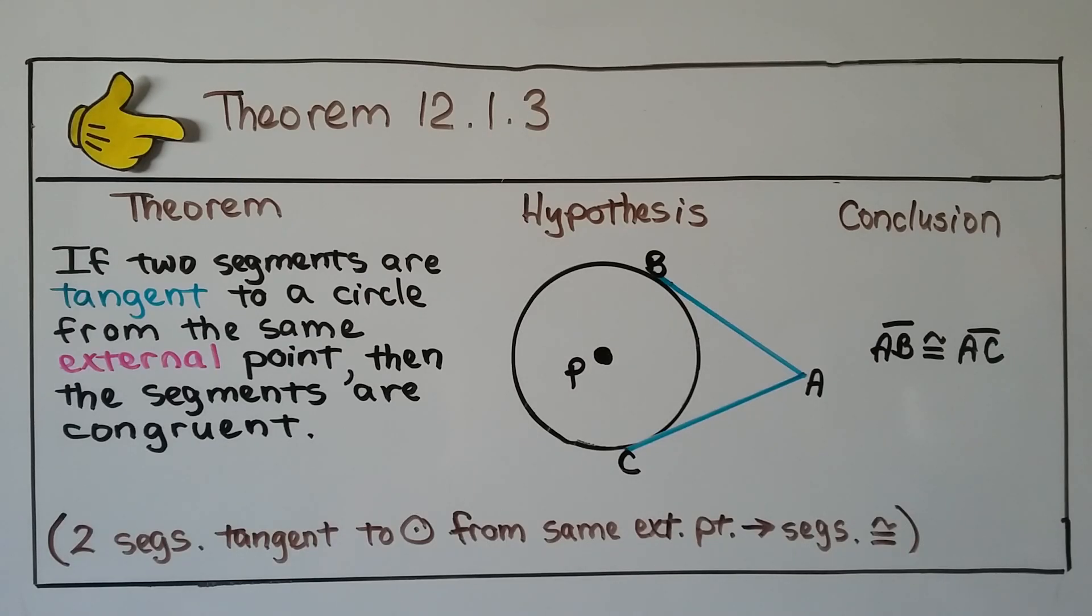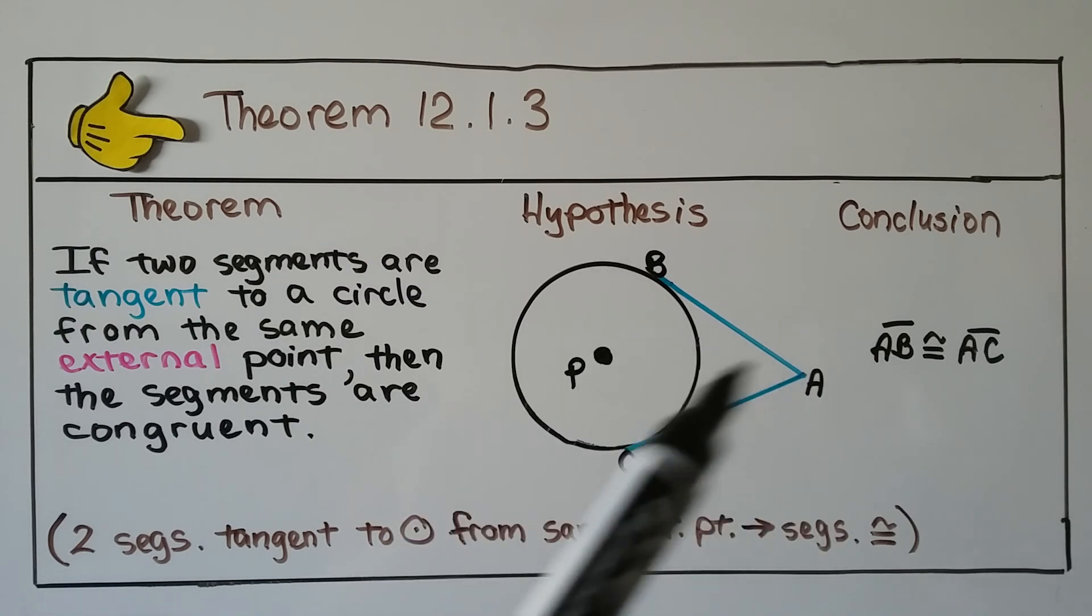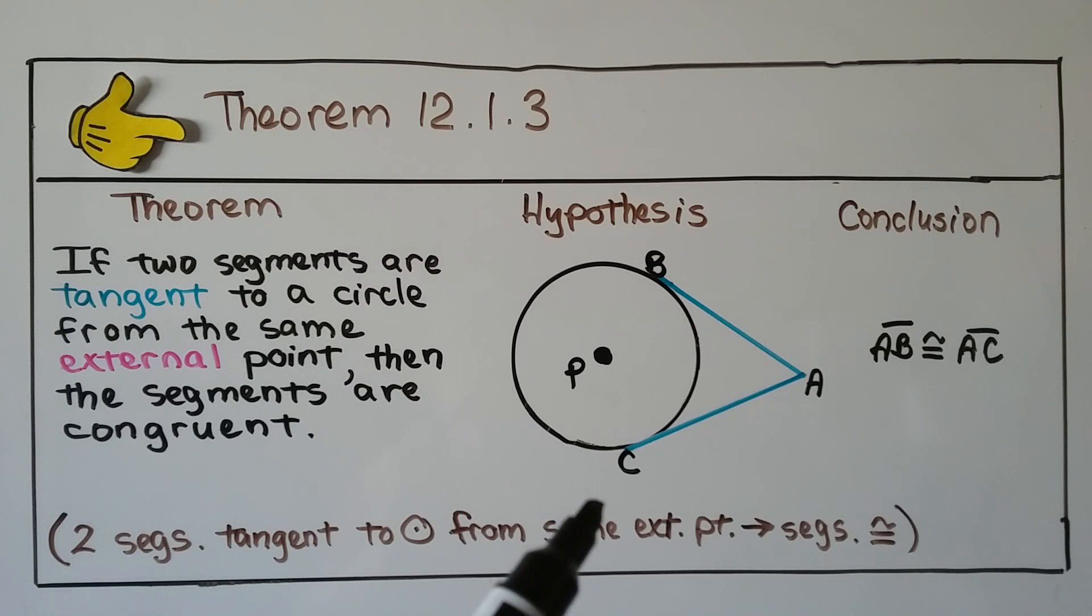We've got our third theorem. It says if two segments are tangent to a circle from the same external point, then the segments are congruent. We have AB and AC, and they're tangent to circle P from the same point A. Our conclusion is that segment AB is congruent to AC. We can write it in proof notation as two segments tangent to circle from the same external point, therefore segments congruent.